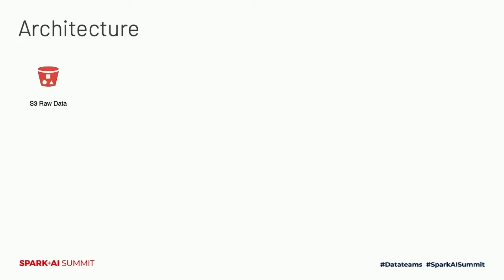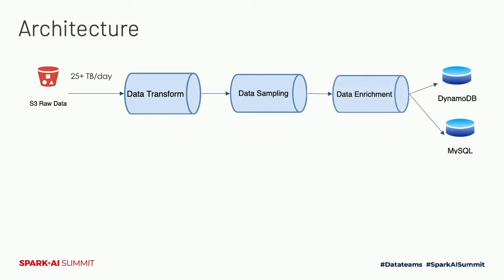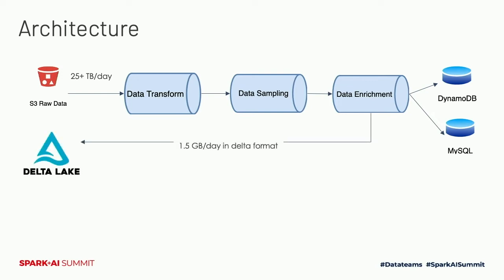All inventory data sits in S3 in raw Avro format. The first module is data transform — a Spark module that reads 25-plus terabytes of data daily, applies transformations including cleaning, prepping, and business rules. Once transformation is complete, we run a sampling algorithm in Spark in a distributed fashion to significantly reduce the data. The next module is enrichment, where samples are enriched via DynamoDB and MySQL datasets. After sampling and enrichment, data is reduced to roughly 1.5 GB per day in Delta format, stored in Delta Lake on a daily basis.